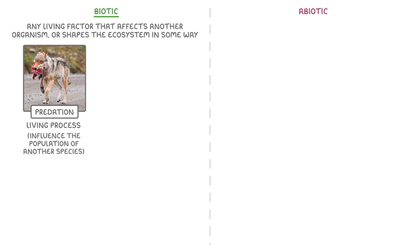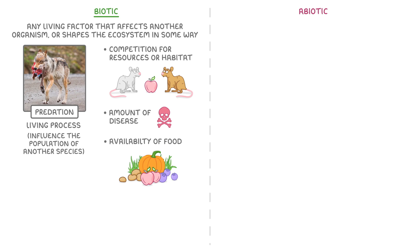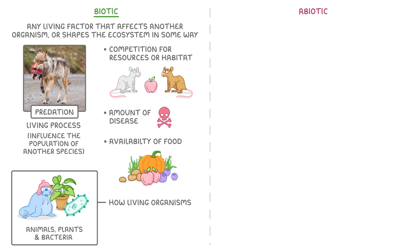Other biotic factors would be things like competition for resources or habitat, the amount of disease, and the availability of food. So if you're asked to find the biotic factors in an ecosystem, just think of all the ways that the living organisms — whether they're animals, plants, bacteria, or anything else that's living — can affect one another.